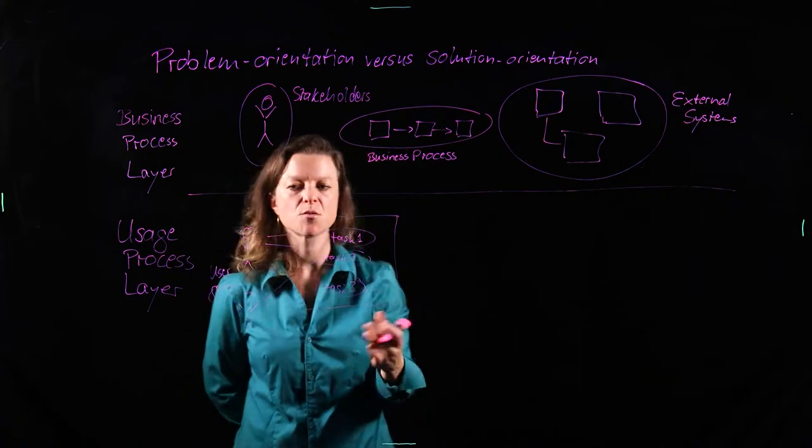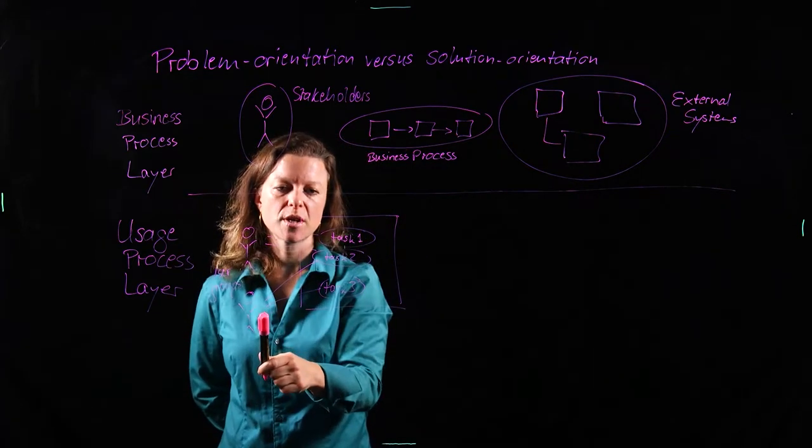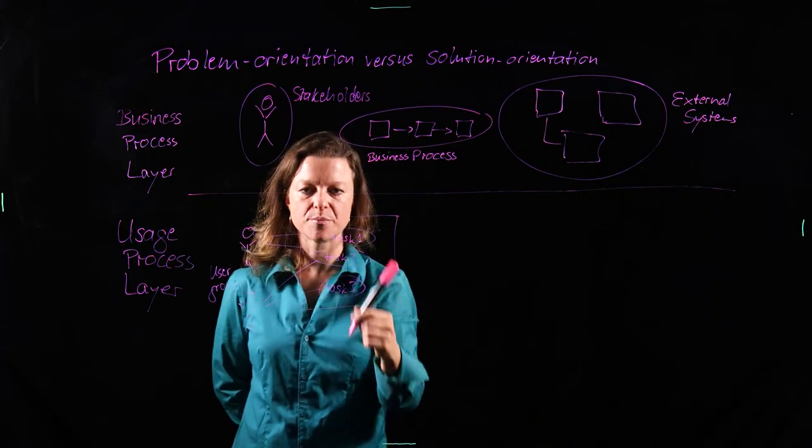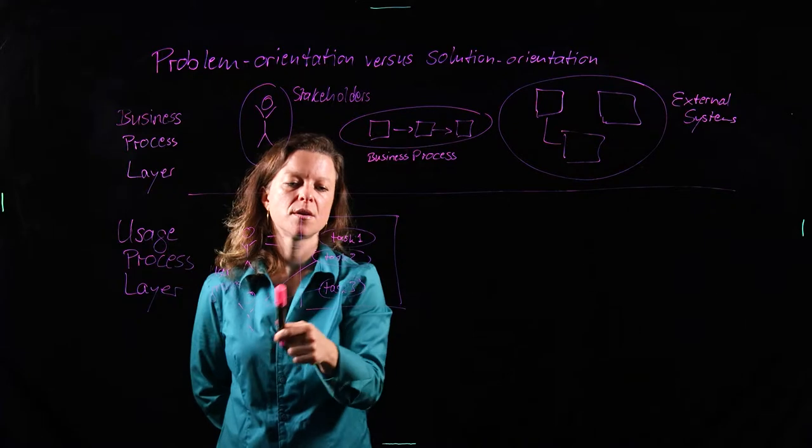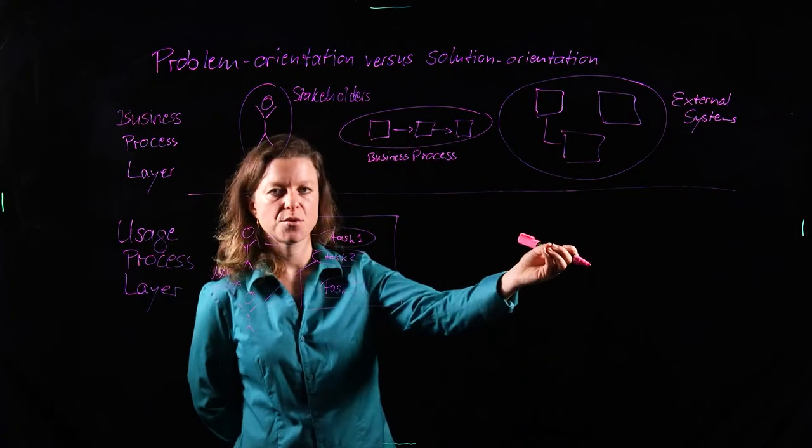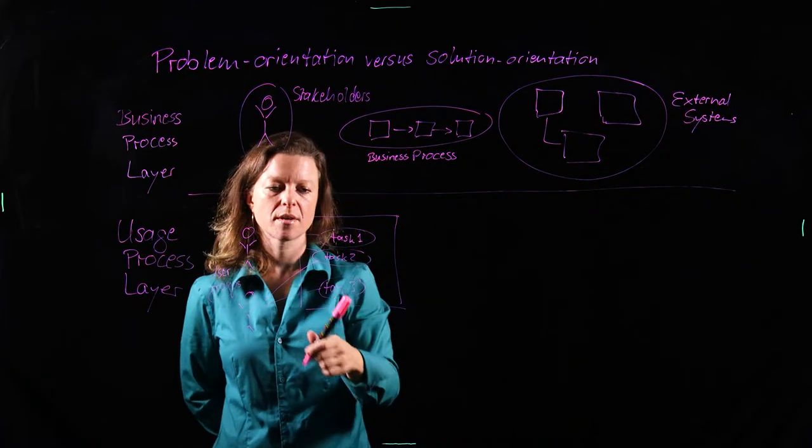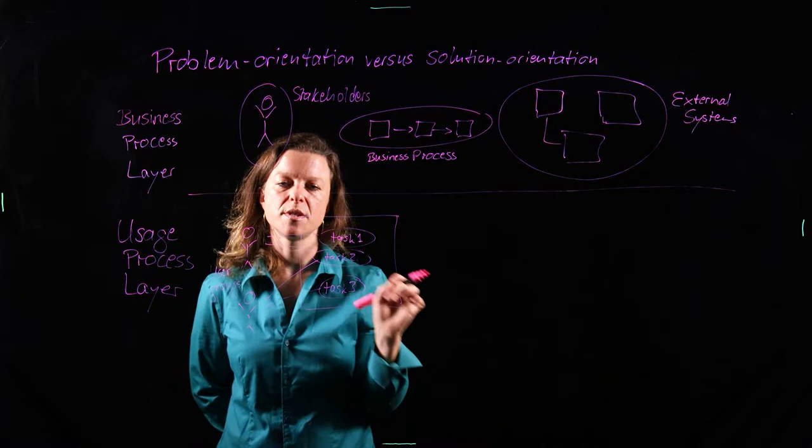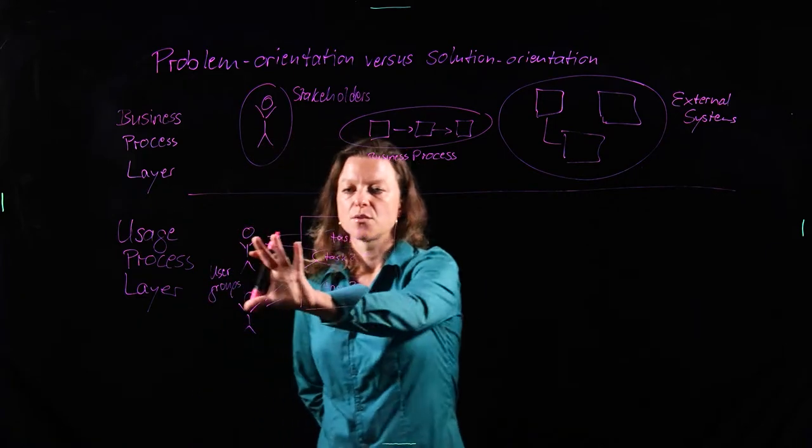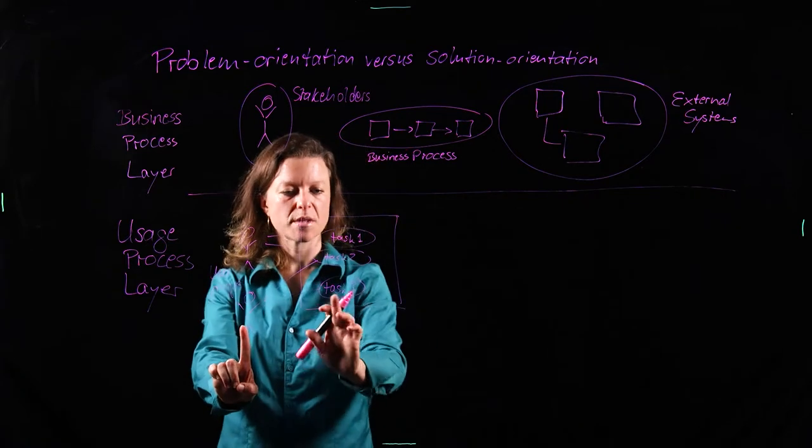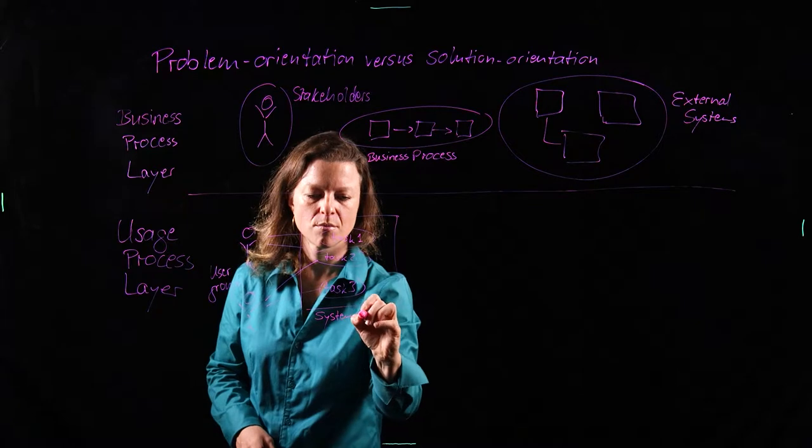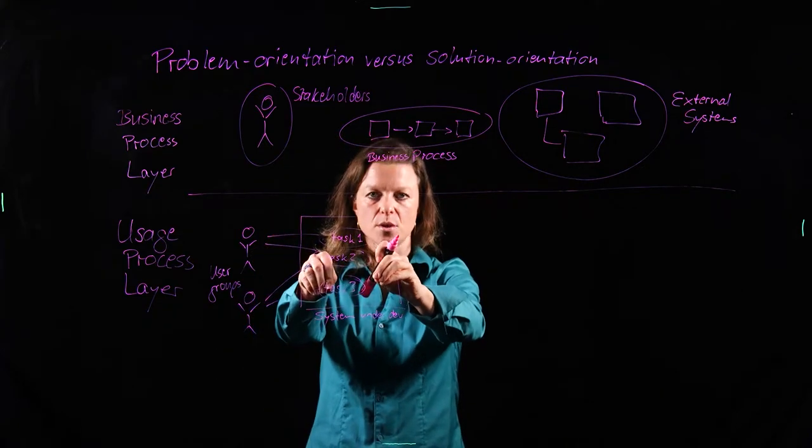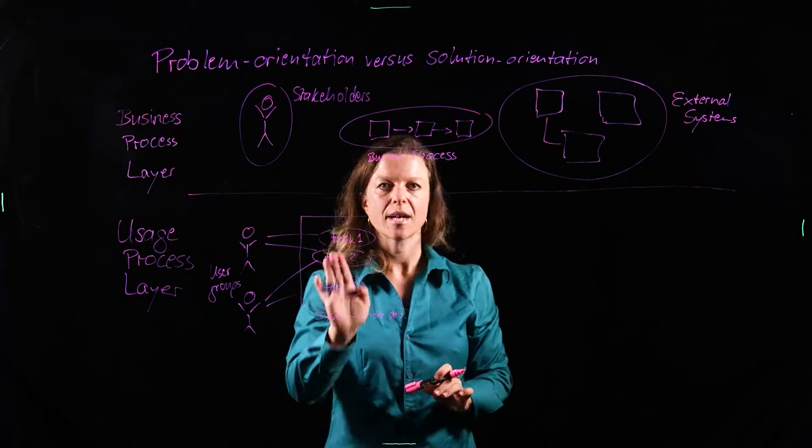Now to stick with that carpooling system, those two user groups may be users who have a car and users who do not have a car. So the user who has a car, they will want to be able to offer rides in their car in that system. And the user who does not have a car will want to post, I'm looking for a ride to San Francisco next Friday, and then see whether they can find a match. And task 2 is agree on a pickup time and date. That will be something that both of those users need access to. So on this level, we talk about what the interaction between the user groups and the system under development looks like. But we do not talk about what that looks like system internally. This is just a black box. We know what it does. We don't know yet how it's going to do that.